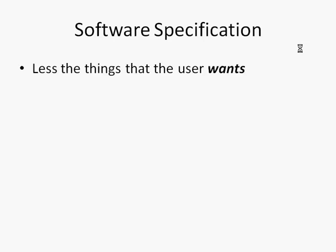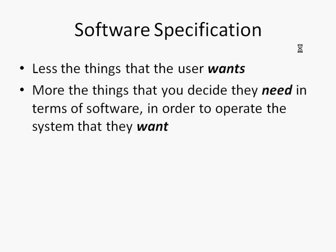So in the software specification, it's less the things that the user wants and more the things that you decide they need in terms of software in order to operate the system that they want. What do we mean by that then?